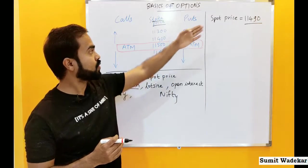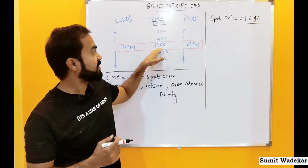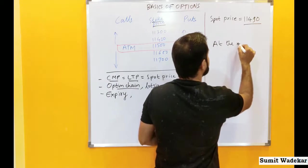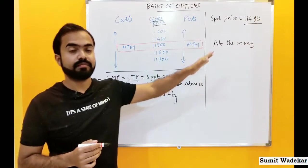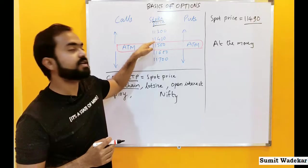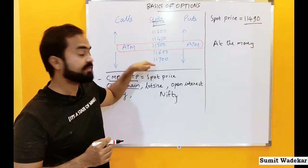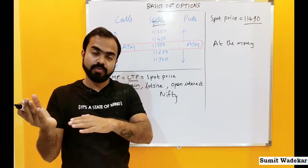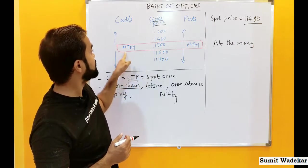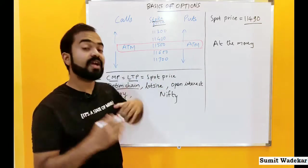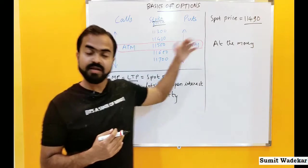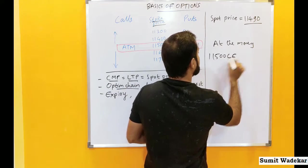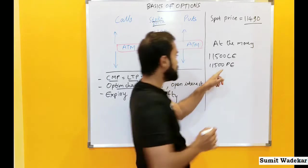If Nifty is at 11,490, then the strike price closest to it is 11,500. We call this ATM, meaning at the money. So 11,500 is the ATM strike price. For every strike price we have both a call and a put option, so 11,500 call and 11,500 put are both at the money.